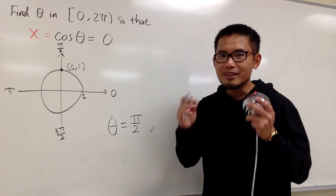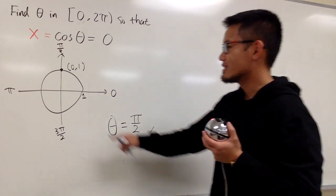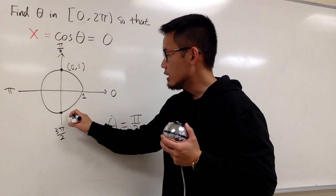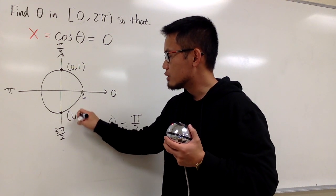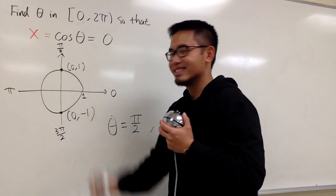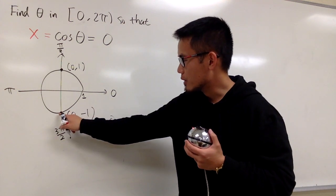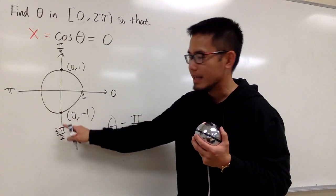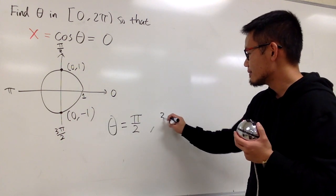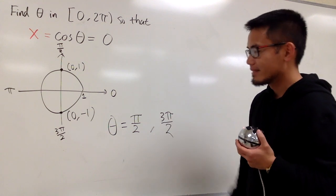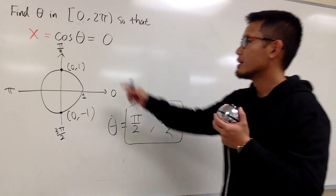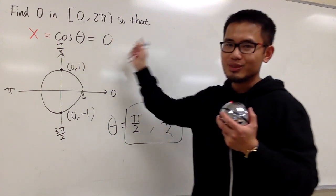But is there another answer? Yes, because we can have this point here as well. This point on the unit circle also has 0 for the x value — it's (0, negative 1). We are looking at this point, which means the angle is 3π/2. So that's another one. And that's it — these are all the possible angles that will make cosine equal to 0.